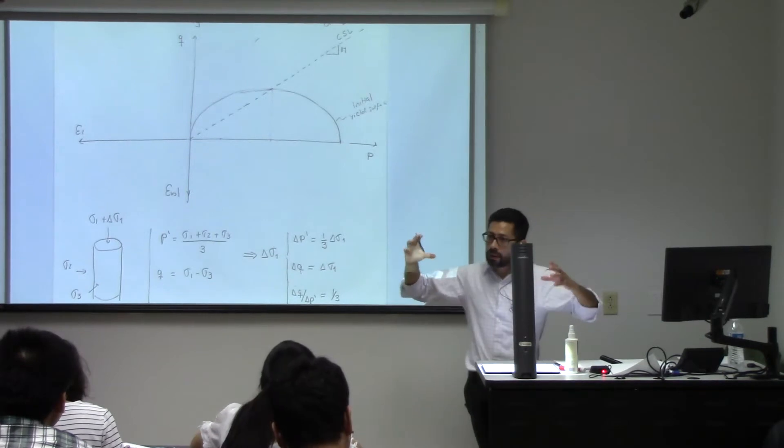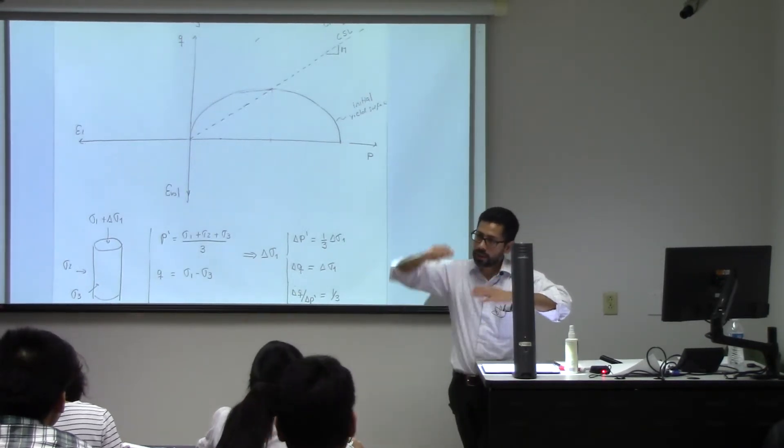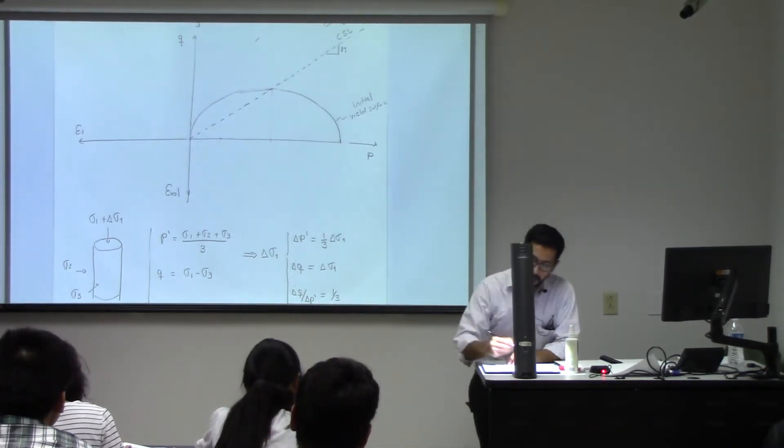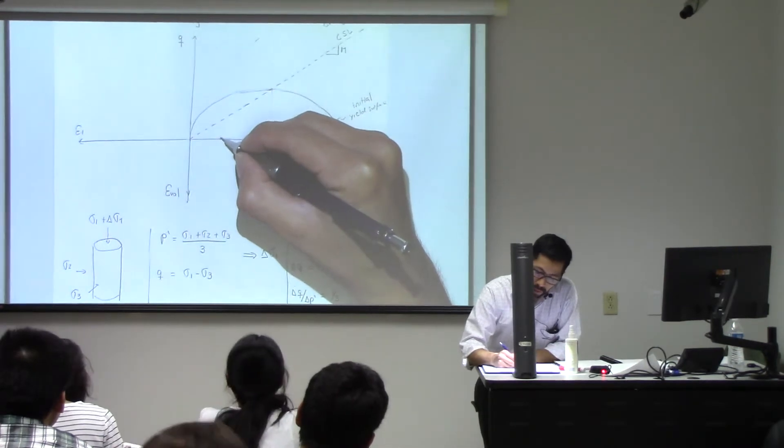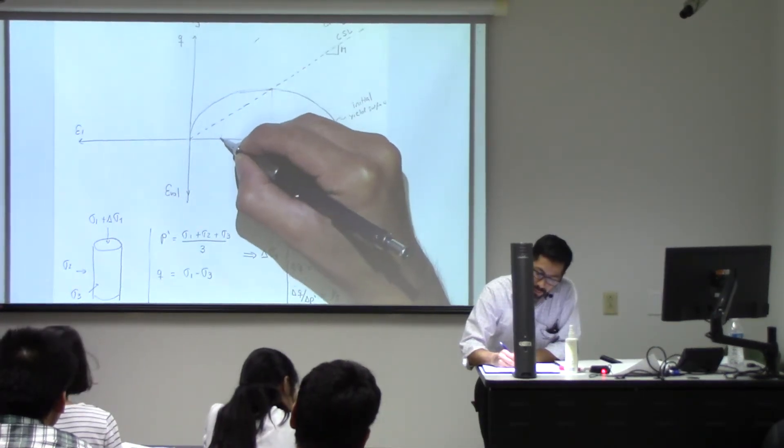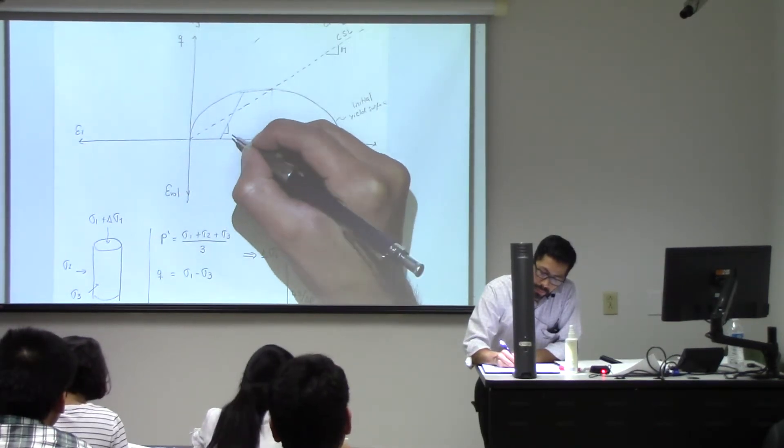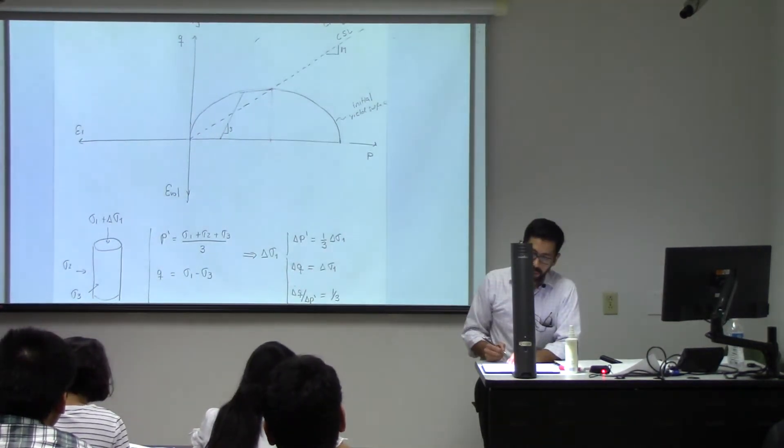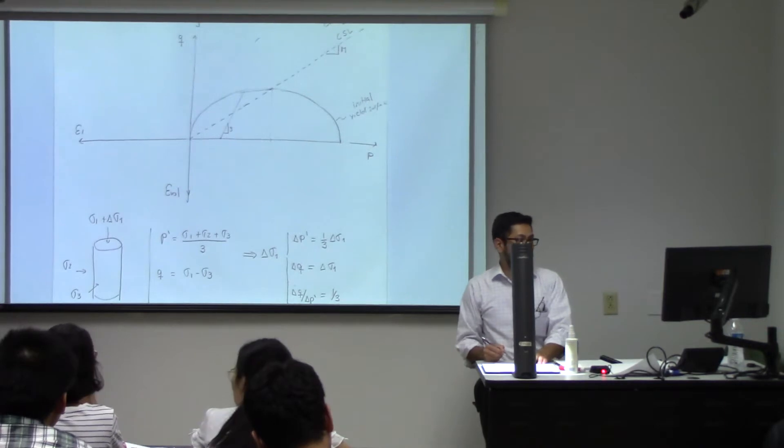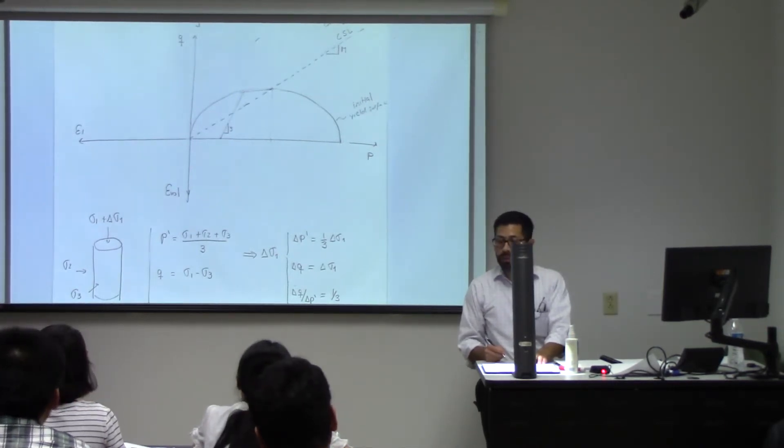I get my sample, I compress it in all directions, and then you start increasing the axial stress. So if I increase the axial stress, this slope is going to be three. The change of delta Q divided by the change of delta P is going to be three.